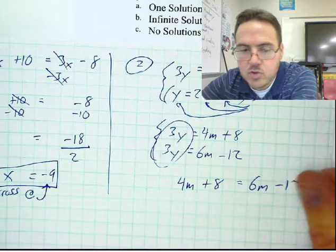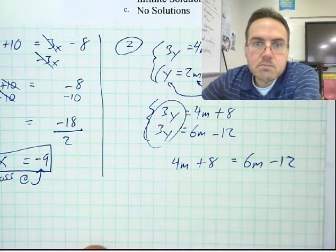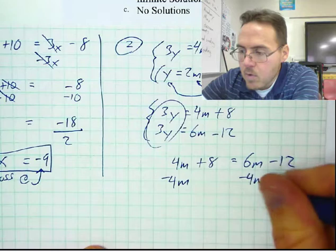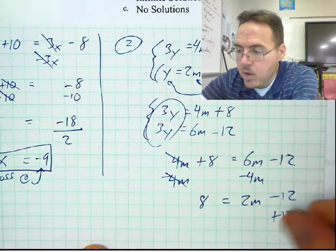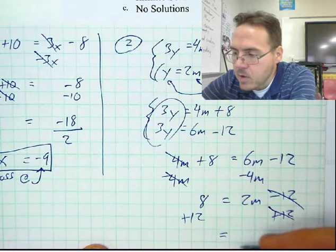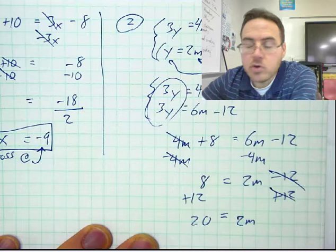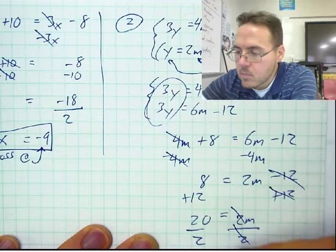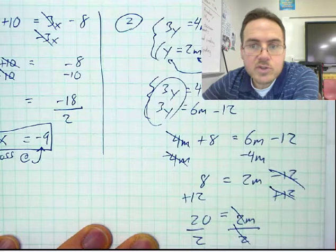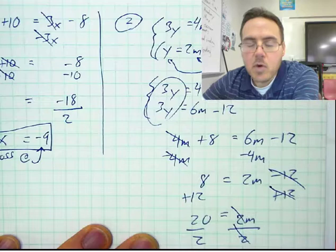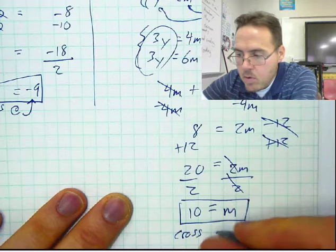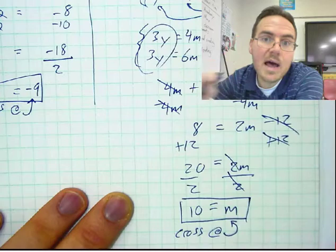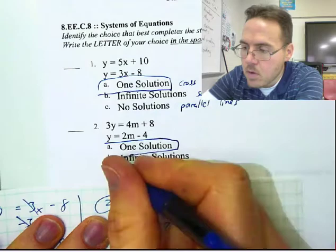I can take away 4M from both sides to end up with 8 equals 2M minus 12. I can add 12 to both sides, giving 2M on the right and 20 on the left. I can divide both sides by 2 — M is equal to 10. This means these two lines cross when M equals 10, which means they cross one time. The answer to number 2 is they are going to cross once.